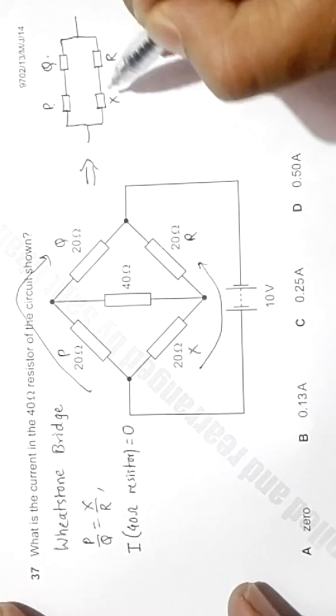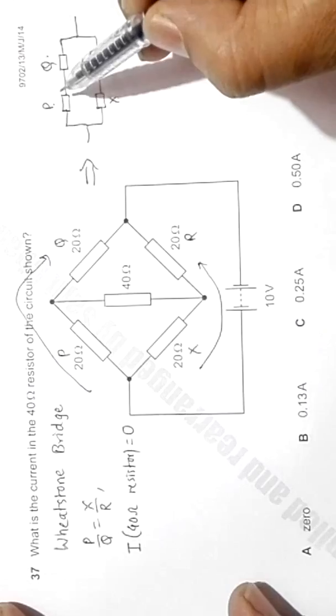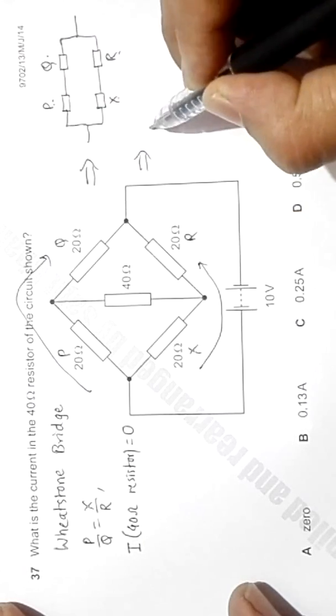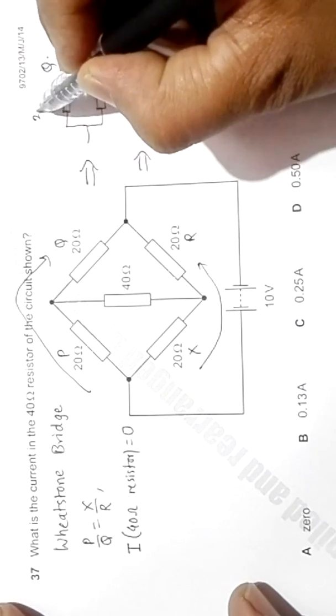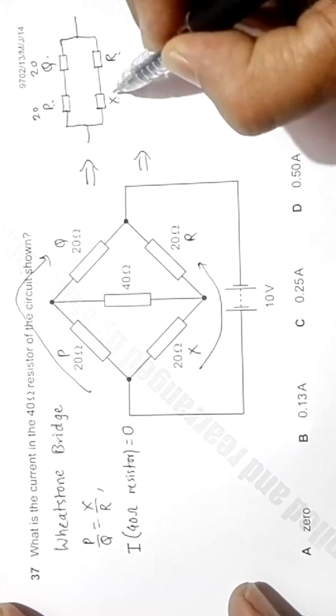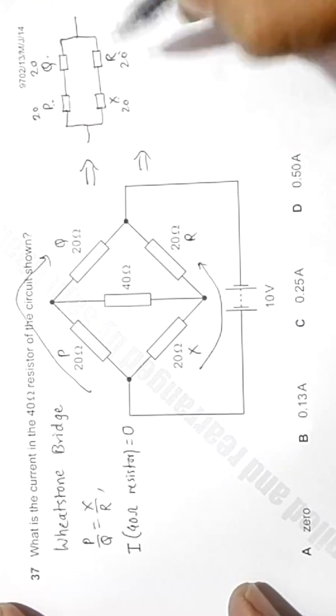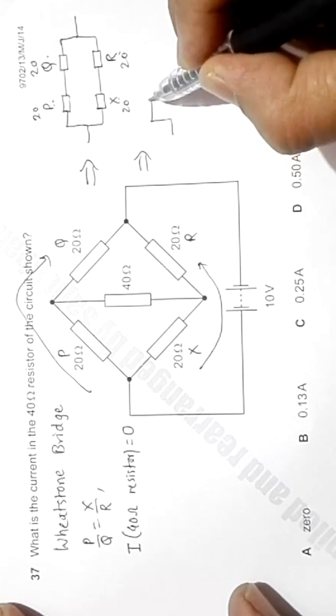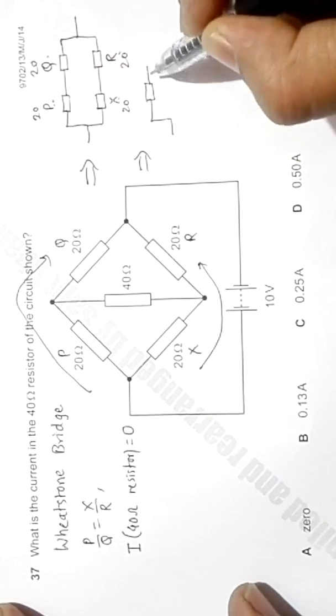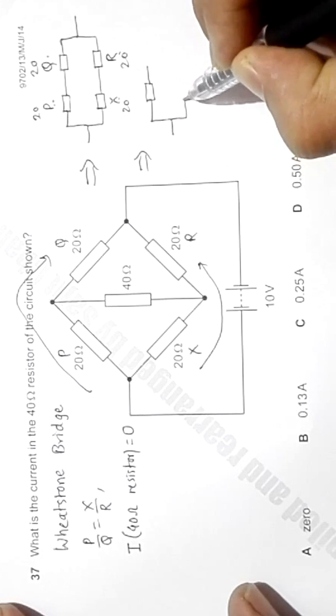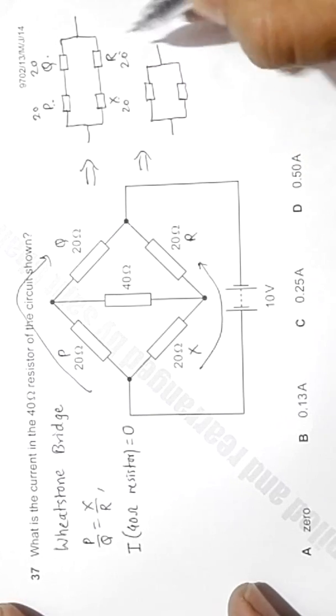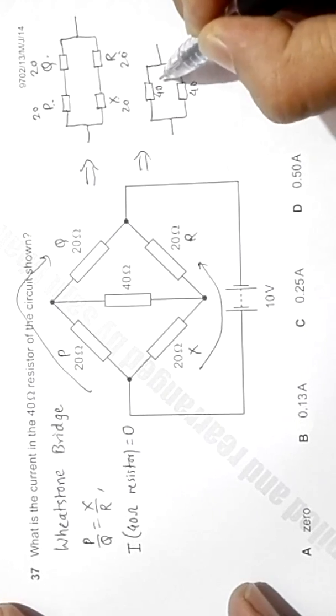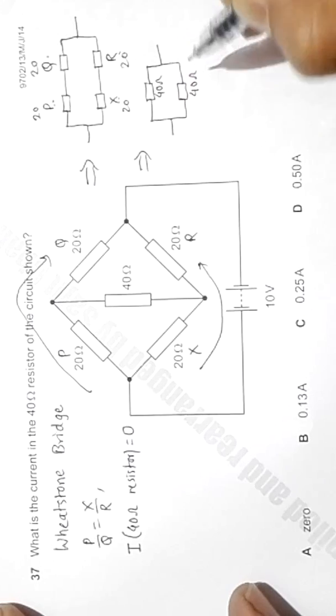Now the series of 20 and 20 is 40, so it will become somewhat like this: a combined resistor of 40 ohm and another of 40 ohm.